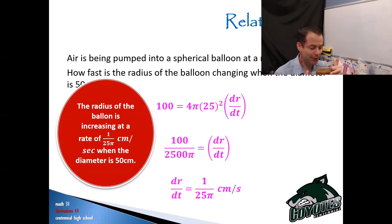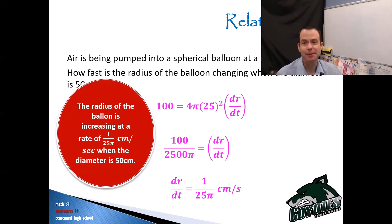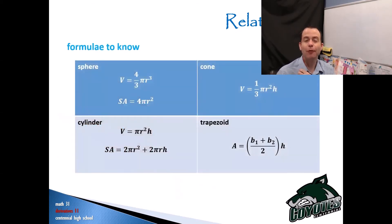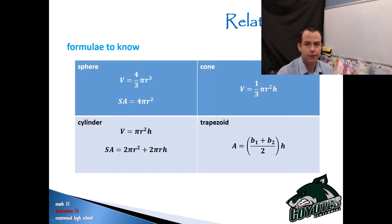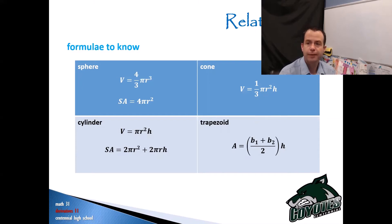You just did your first related rates question! There's a section in your book with formulas to know — you might want to copy some of these down: volume of a sphere, surface area of a sphere, volume of a cylinder, surface area of a cylinder, area of a trapezoid, and volume of a cone.